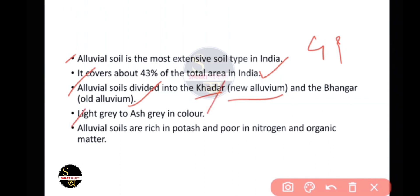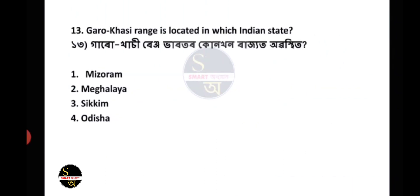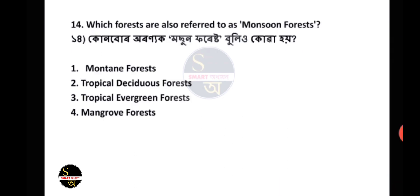Alluvial soils are light gray to ash gray in color, and are rich in potash but poor in nitrogen and organic matter. Question 13: Garo Hills ranch is located in which Indian state? The answer is from the Northeast — Meghalaya.